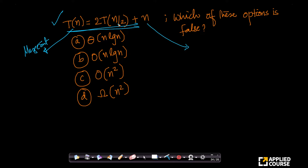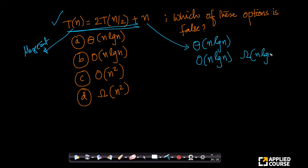The moment you see a recurrence relation like this for merge sort, we immediately know that this is Theta of n log n. When something is Theta of n log n, it means it is tightly bounded both above and below by n log n. That means it is both Big O of n log n and Big Omega of n log n — both are true. So that option is not false; it is correct.